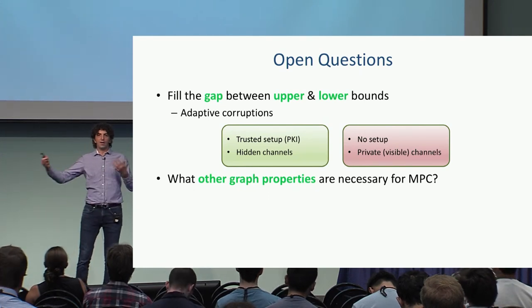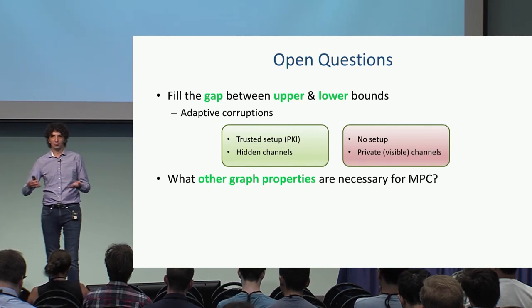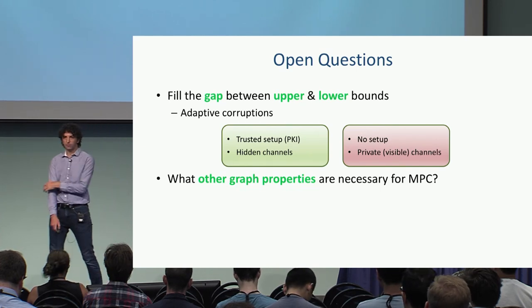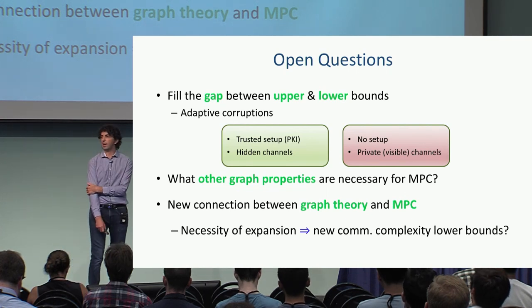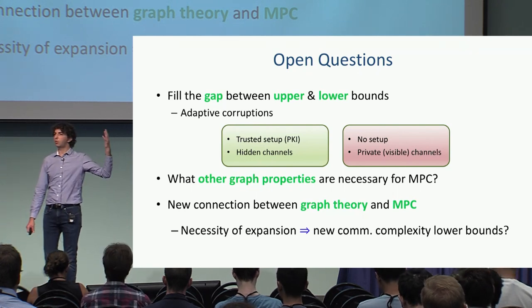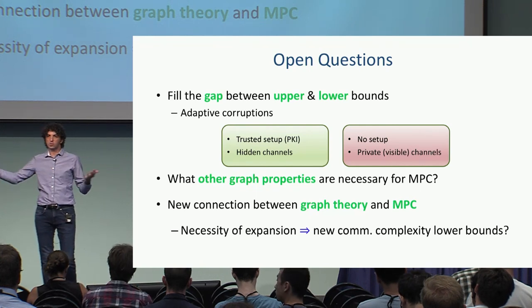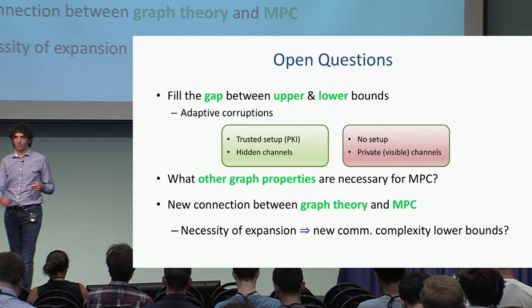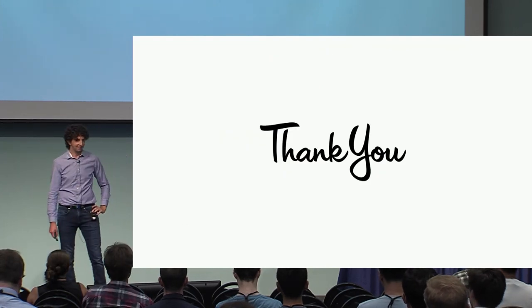Another natural question is what other graph properties are interesting to analyze. I'd be happy to talk to people about other interesting graph properties we can analyze using this framework. Finally, we have a new connection between graph theory and secure computation — the fact that we must have expansion may give us new lower bounds on communication complexity. There are many nice things we can analyze using this framework. Thank you.